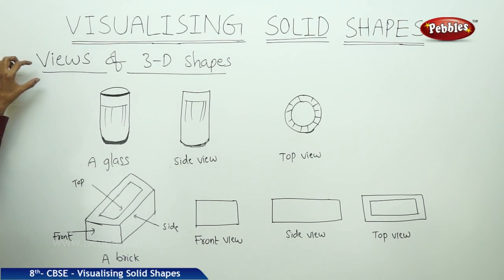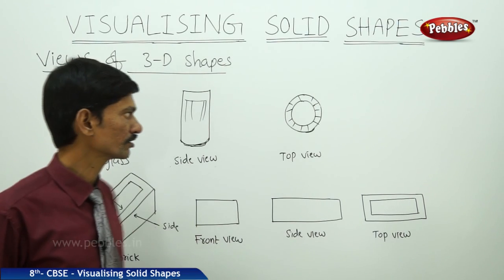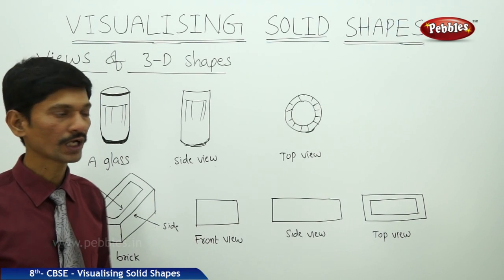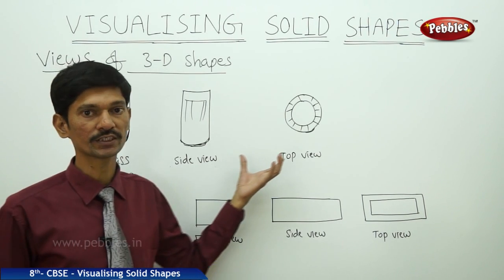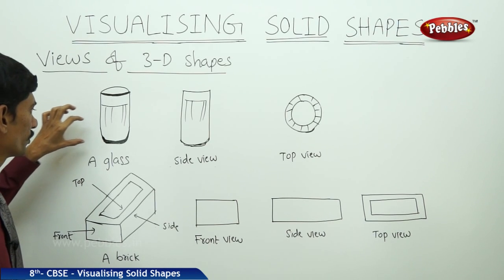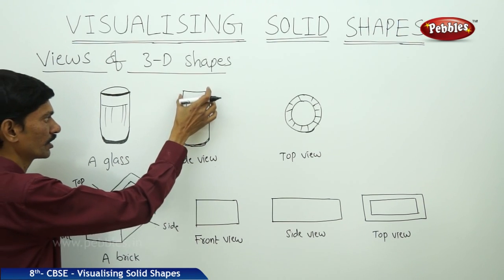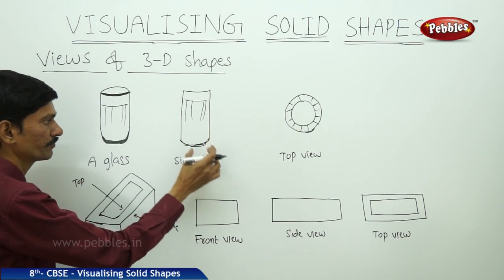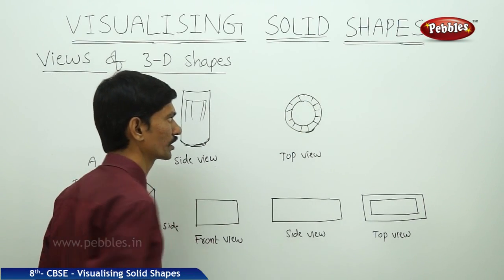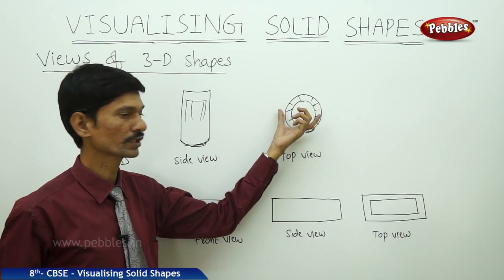Now let us discuss the next topic: views of 3D shapes. Three-dimensional solid shapes can look different from different positions and can be drawn from different perspectives. If you consider a glass and see it from the side, it looks like a cylindrical shape. If you see it from the top, it looks like two concentric circles — like a circular path or a ring.